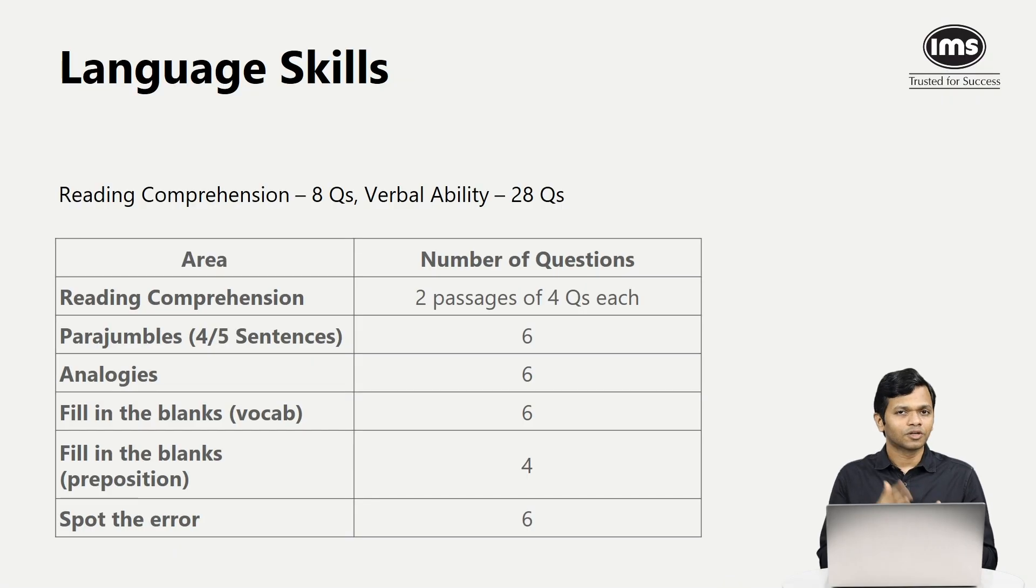Now let's talk about the third and final section, which is the language skills. There were eight questions from reading comprehension and 28 questions from verbal ability. Regarding reading comprehension, there were two passages of four questions each and the passages were a little difficult to read. Though they were not very lengthy, the typical length was about four to five paragraphs, but the topic or subject of those RCs was very difficult to read.